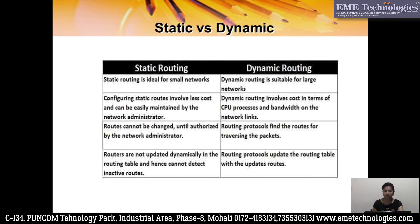If there is a small network, we can easily do manual configuration and maintain it. But if there is a large network, it will be difficult to configure each network manually. So we use dynamic routing in large networks and static routing in small networks. Static routing involves less cost because you don't have to take costly routers - you can take simple routers. Since static routing is manual configuration, the routers don't have to do any complex calculation, so we can select routers with less RAM or a slower processor. That's why static routing has less cost and is budget-friendly.